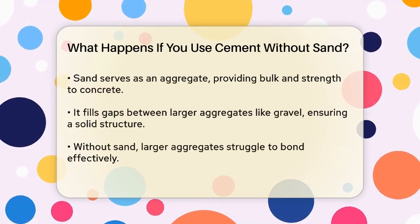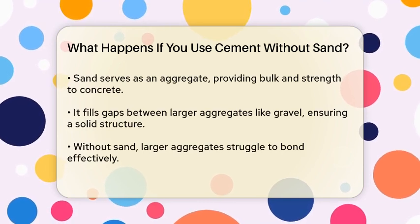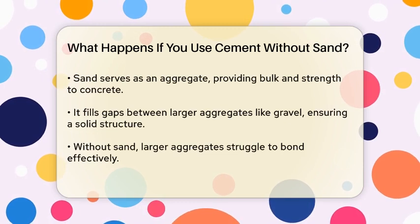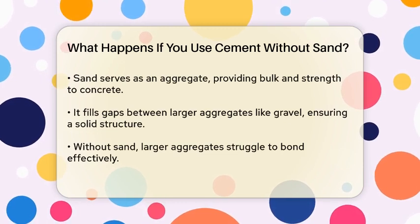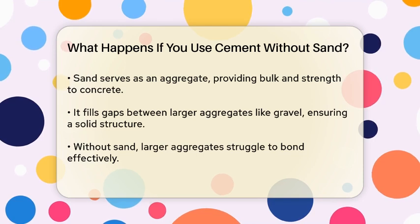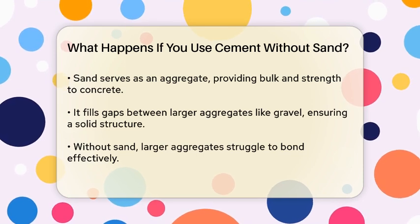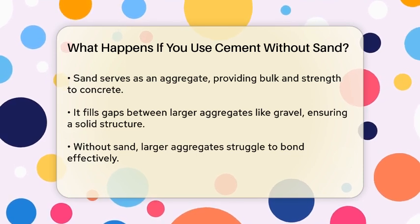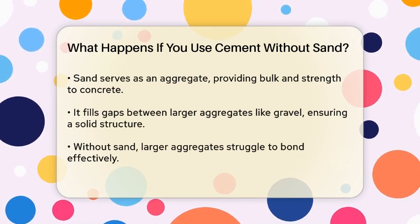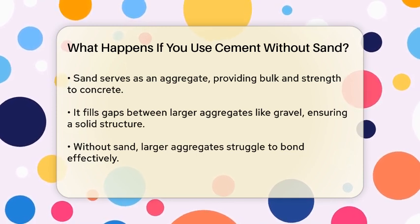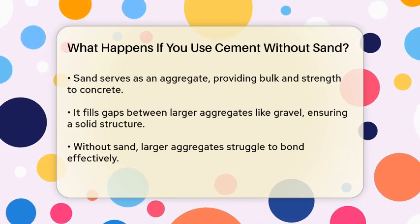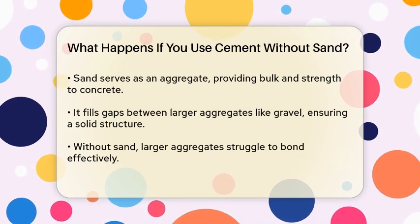When you add sand to the mix, it acts as an aggregate, which means it provides the bulk and strength that cement alone can't. Sand fills the gaps between larger aggregates like gravel or crushed stone, creating a solid and durable structure. Without sand, the larger aggregates wouldn't stick together well because their surfaces don't meet up properly. Imagine trying to glue large rocks together with just a thin layer of cement paste — it wouldn't hold very well.